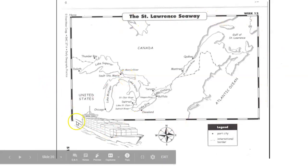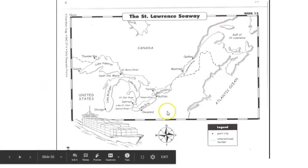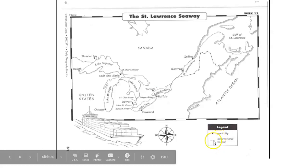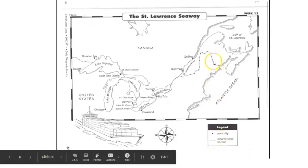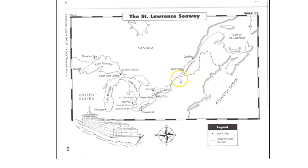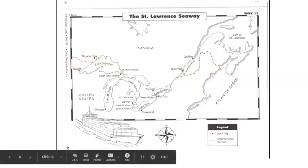Use this map to be able to answer your questions. Pay attention to your legend. The dots are the port cities and these little dashed lines are the border between Canada and the United States. So here's your border right here — you can see the border there and right there.